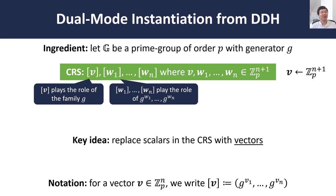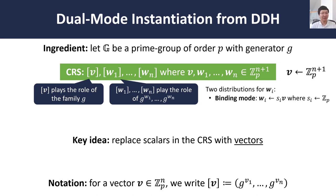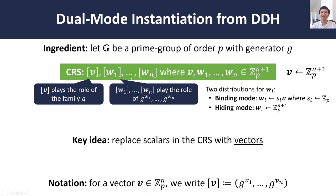So now the question is, how do we sample these w's? We define two distributions. The first, called the binding distribution or binding mode, samples wᵢ to be a scalar multiple of v. Alternatively, we can sample the wᵢ's uniformly at random from the full space — this defines the hiding mode. In the binding mode, all of the vectors v, w₁ up to wₙ are linearly dependent and span a subspace of rank 1 spanned by v. While in hiding mode, since we sample all of these vectors uniformly at random and independently, with overwhelming probability the collection of vectors in the CRS are full rank.